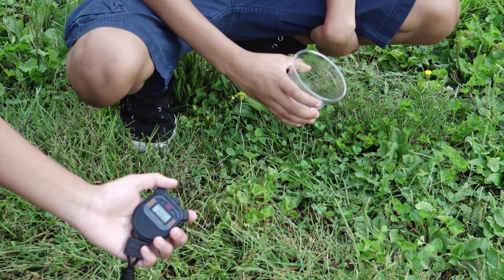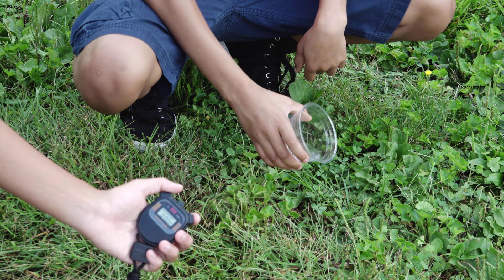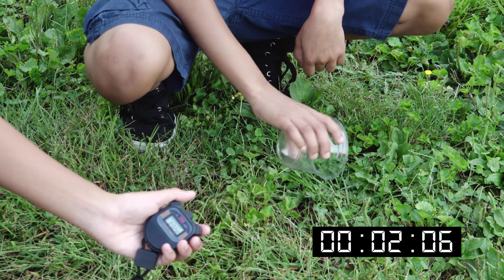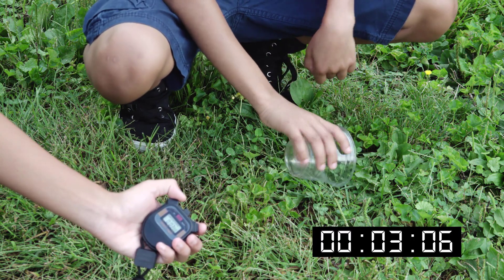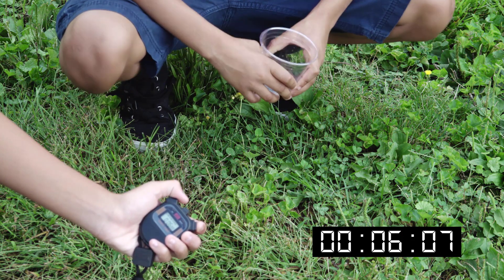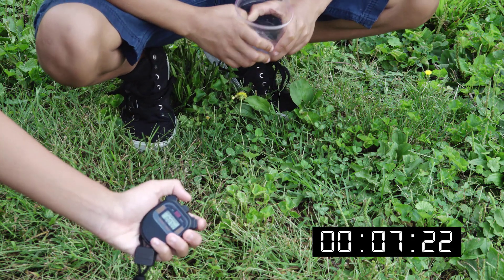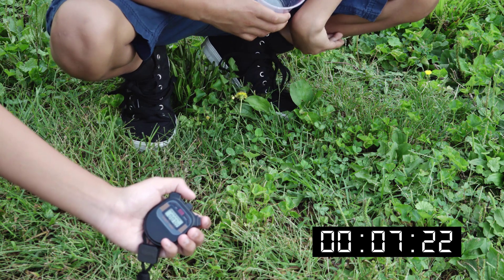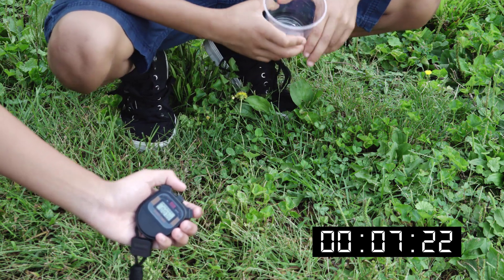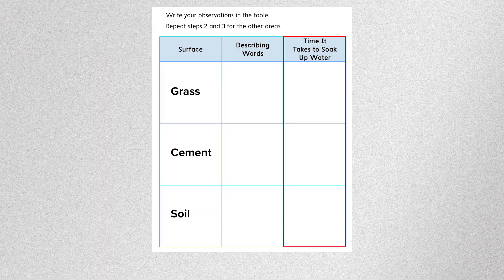Have your teacher fill your cup of water. Have your timer ready and set it to zero. Pay attention to the blades of grass. Pour the cup on the grass and start the timer. When all the water is soaked up, stop the timer. Does the grass soak up the water? Record the time on the right side of the data table. When you're finished recording, select Continue.